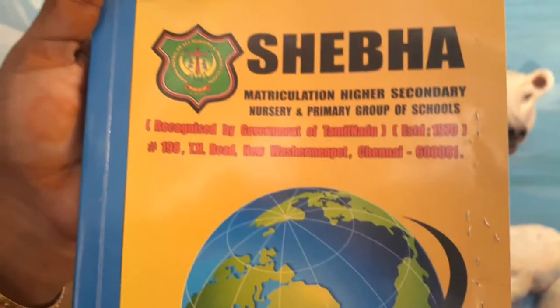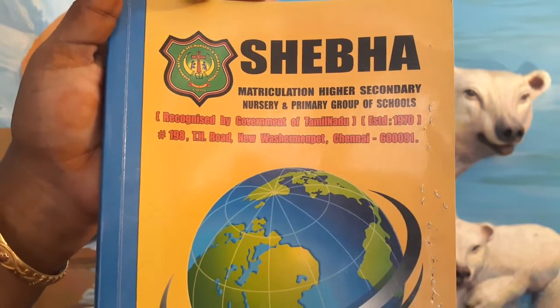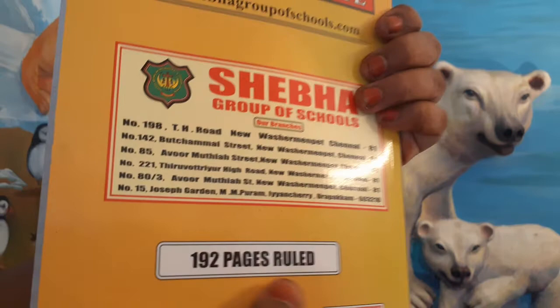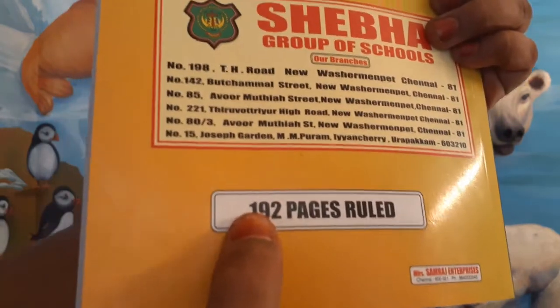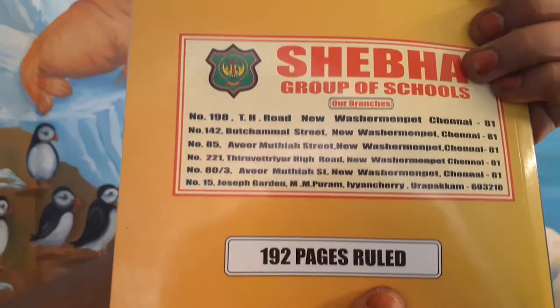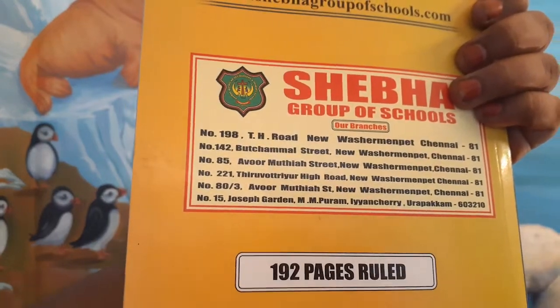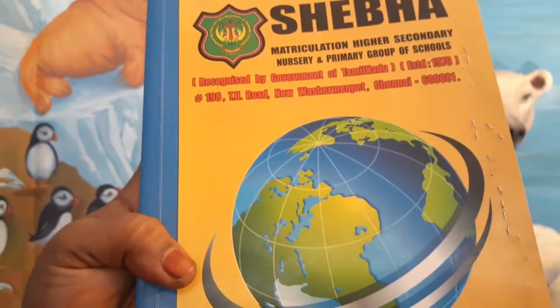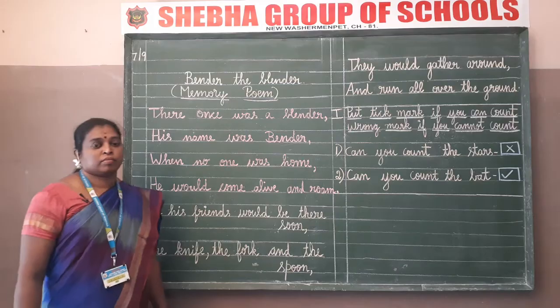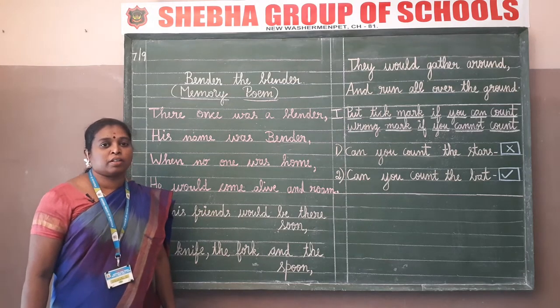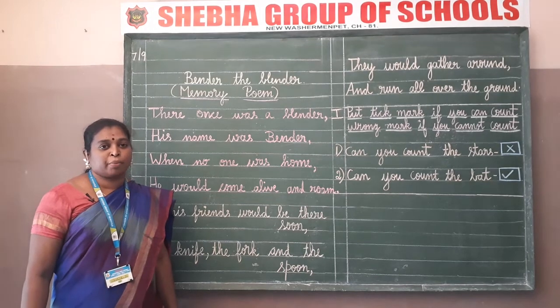Happy morning children, a warm welcome from Sheba Group of School online class. Hope that you are all fit and fine. Children, already we have learned the lesson and today we are going to write the lesson in the classwork. Dear students, all of you take your English classwork - 192 pages ruled note. Are you all ready to write the classwork? First, take your pencil, sharpen your pencil.